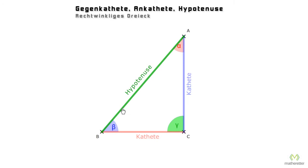By the way, hypotenuse translates as 'outstretched,' which makes sense as it's always the longest side of the right triangle. The other two sides are called legs — the two shorter sides — and a leg may be either opposite or adjacent. So depending on which angle we select, the terms change.